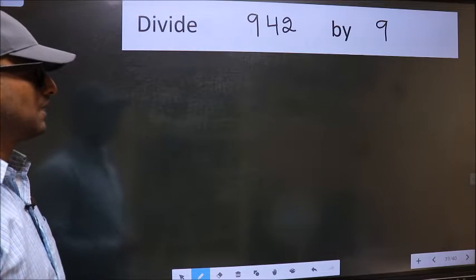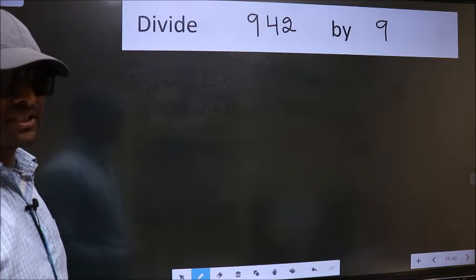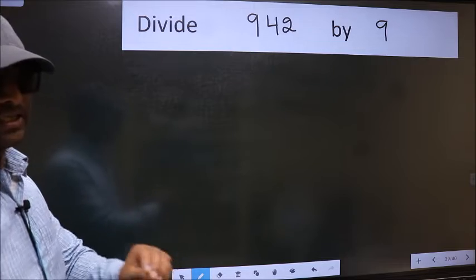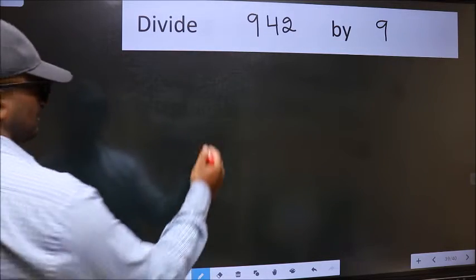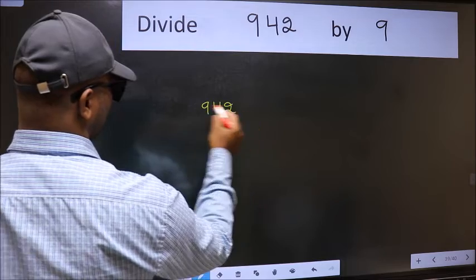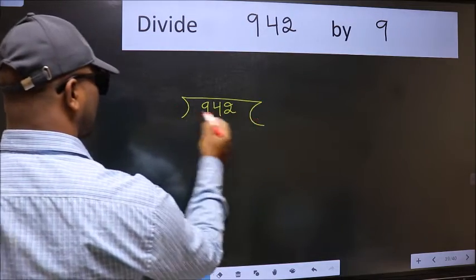Divide 9.42 by 9. To do this division, we should frame it in this way: 9.42 here and 9 here.